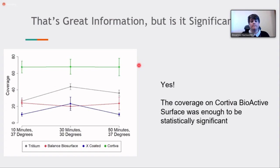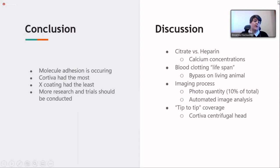So in conclusion, molecule adhesion is occurring on all of our circuits. Cortiva did have the most with about 67%. X-coating had the least with about 15%. More research and trials need to be conducted. Some discussion points that we ran into, not only while we were running the trials, but after the trials, when we were putting together our papers and abstracts.